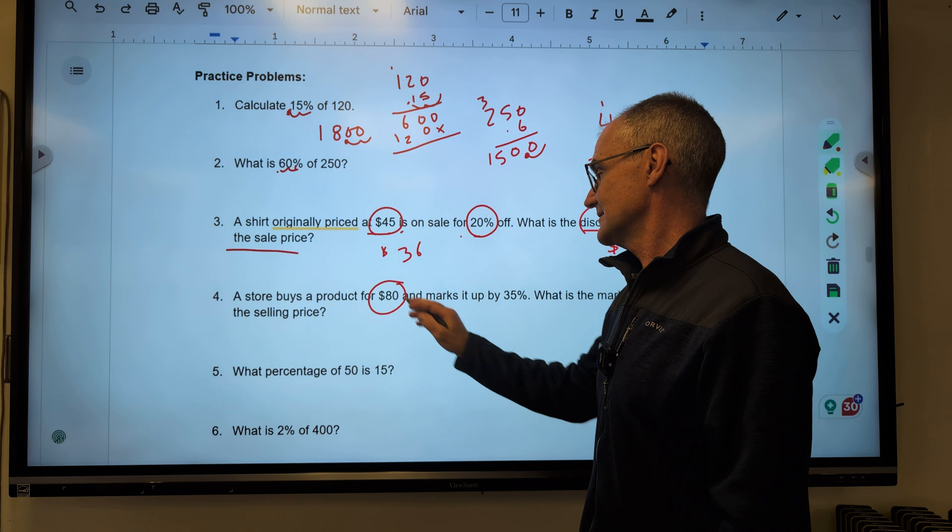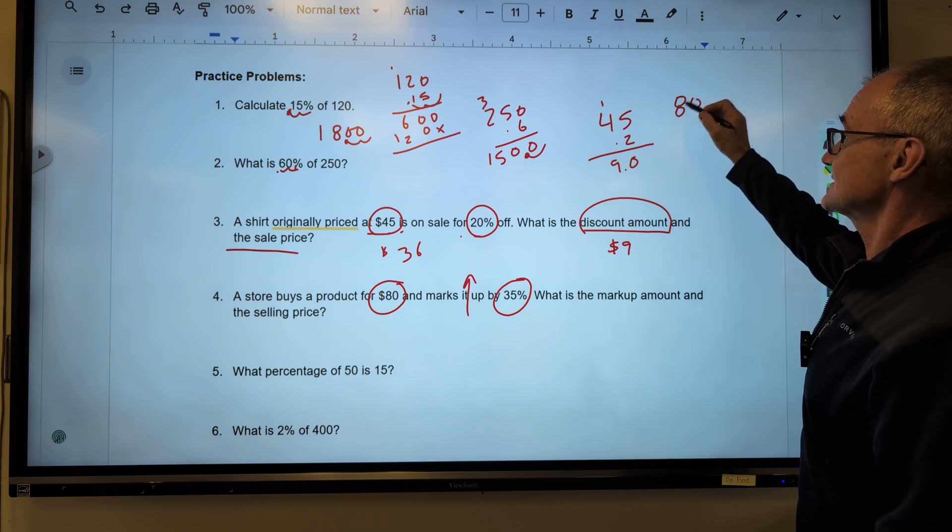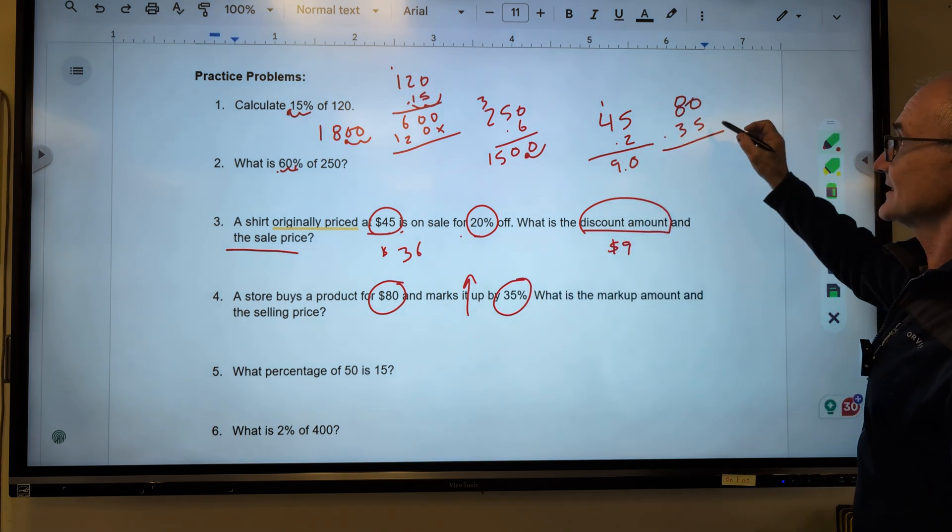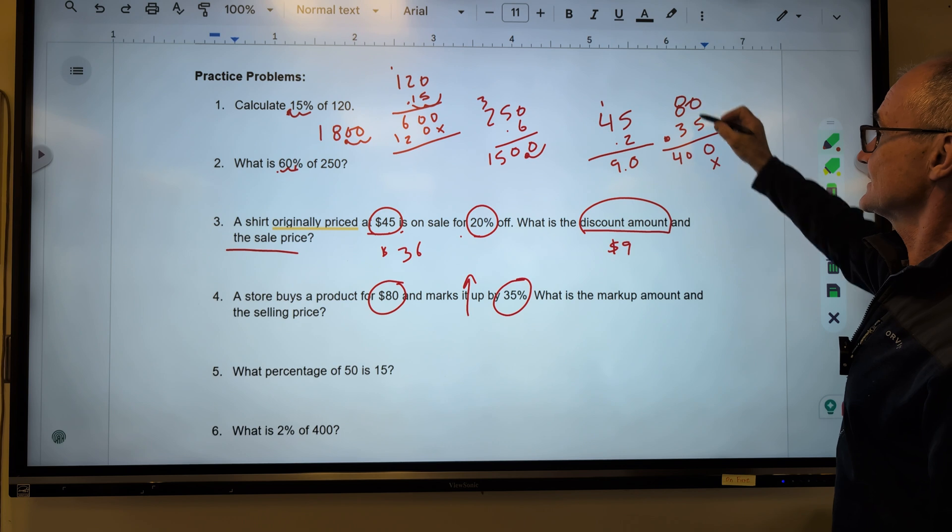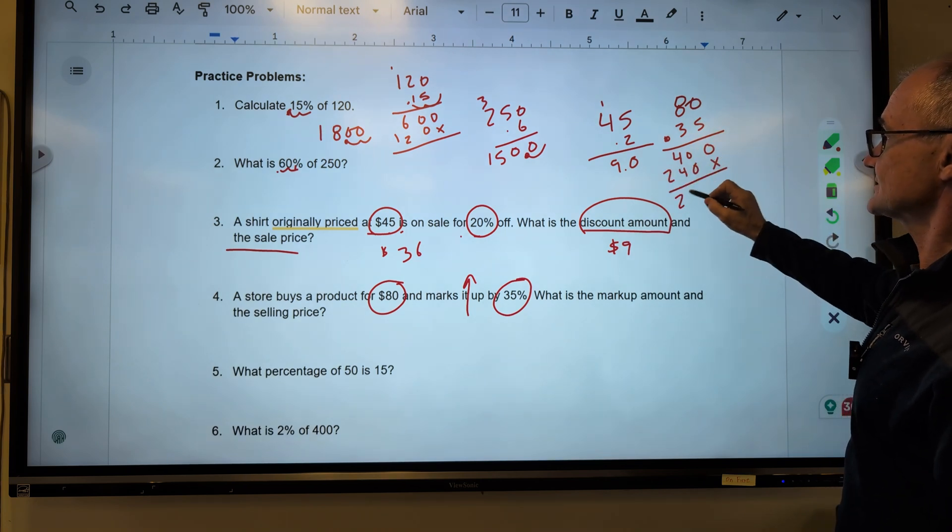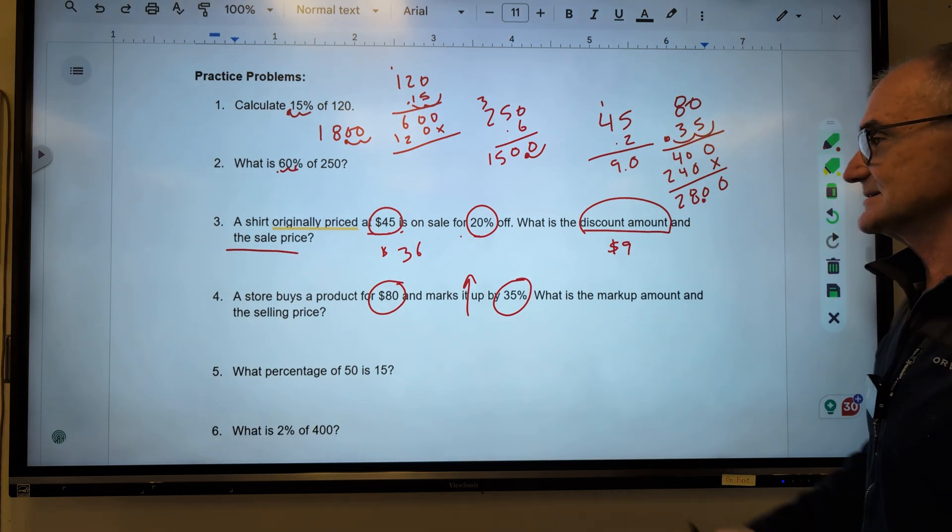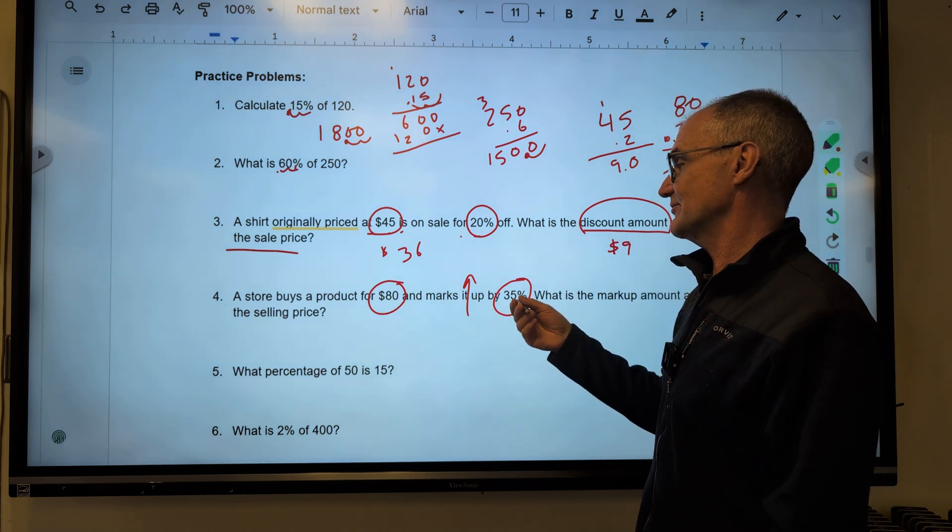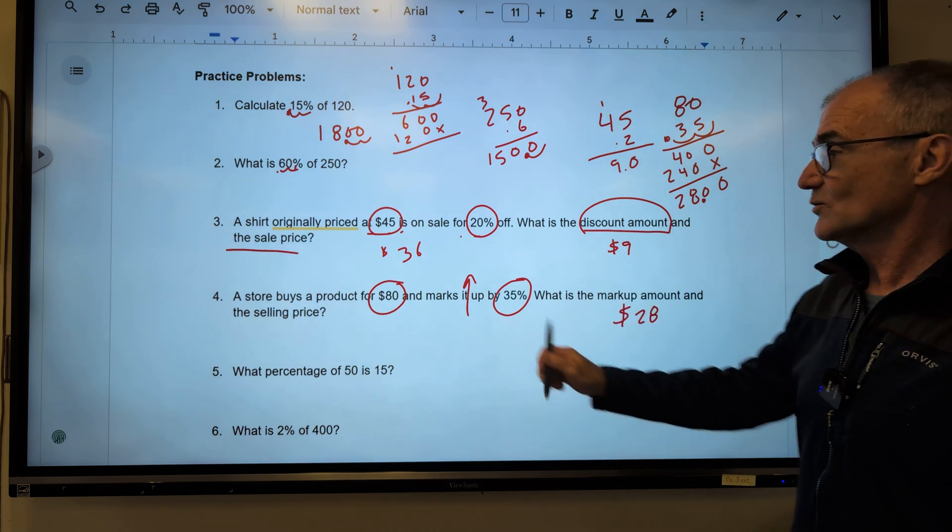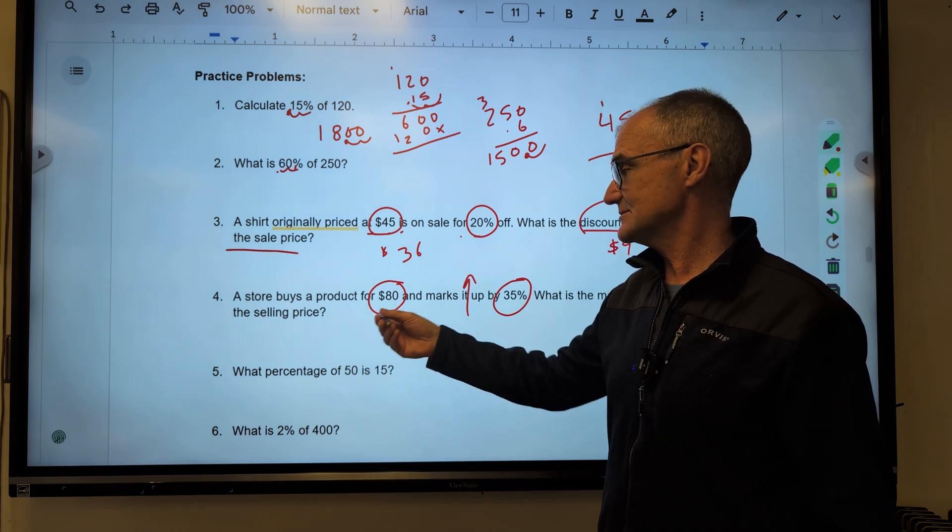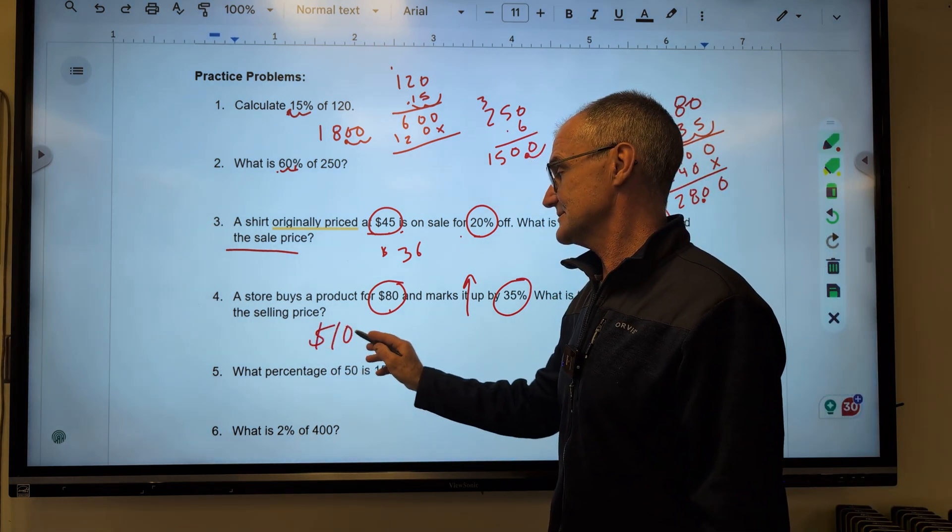Store buys a product for $80, marks it up 35%. So I'm going to do that $80 times the decimal equivalent, $0.35. I could have dropped the zero there. I'm going to get $0.40. Placeholder, $0.24. Add across, $28.00. I'm over $12, so I get $28. Think about that for a second, if that makes sense. Store buys a product for $30, marks it up 35%, like a third of that. So $28.00 sounds good. What is the markup amount? $28.00. What is the selling price? I'm going up this time, right? So I start here. I go up this. 80 and 28 gives me 108 right there. So two answers on that problem.